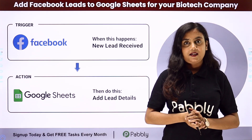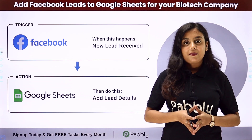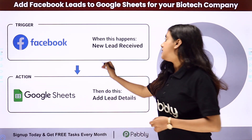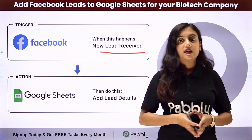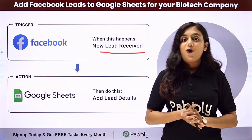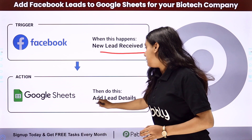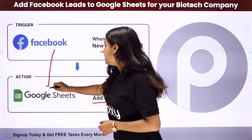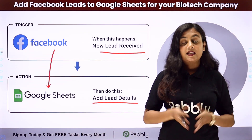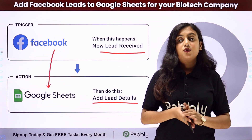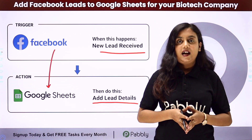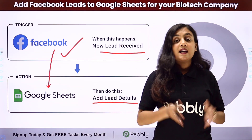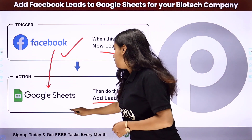I am an owner of a biotech company and I am promoting my business with the help of Facebook lead ads. What I want is that every time a new lead is generated in my Facebook lead ads, automatically all the data of that lead should be transferred into my Google Sheets. For that we need to create an automation between Facebook lead ads and Google Sheets with the help of Pabbly Connect. In Pabbly Connect, to start an automation process we need triggers and actions. My trigger application is going to be Facebook lead ads and my action application is going to be Google Sheets.